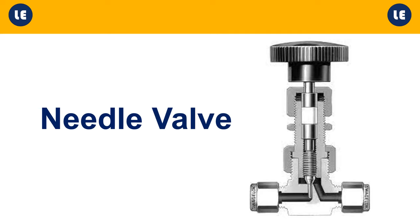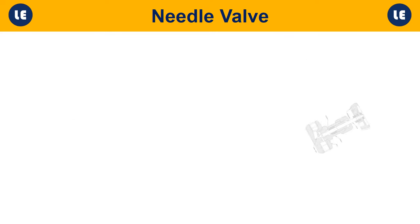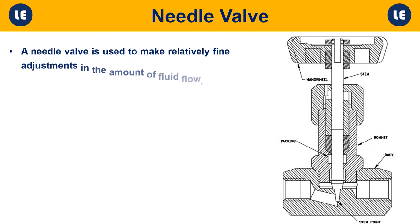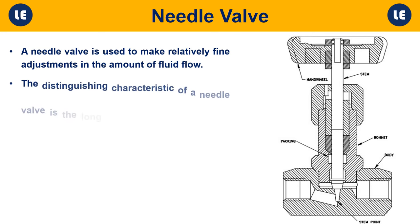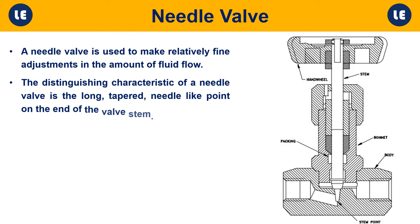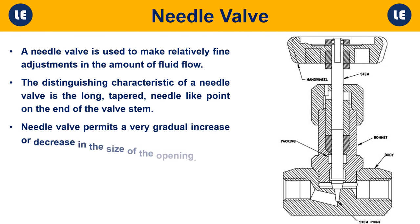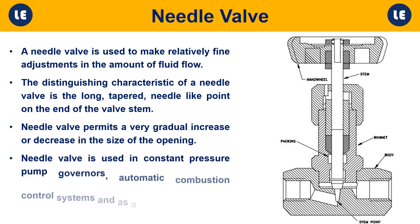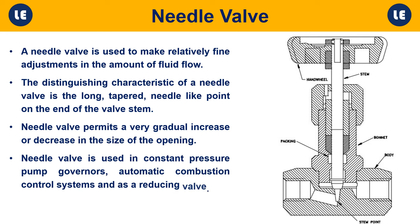Needle valve: A needle valve is used to make relatively fine adjustments in the amount of fluid flow. Its distinguishing characteristic is the long, tapered needle-like point on the end of the valve stem. A needle valve permits a very gradual increase or decrease in the size of the opening. It is used in constant pressure pump governors, automatic combustion control systems, and as a reducing valve.